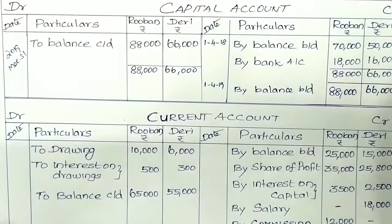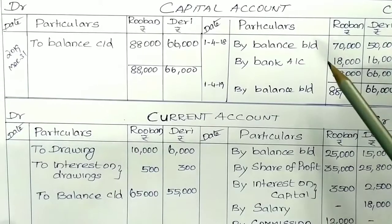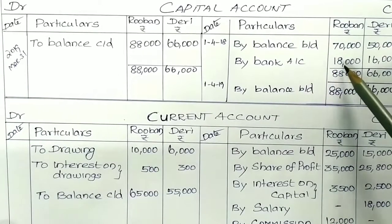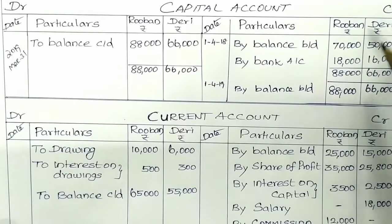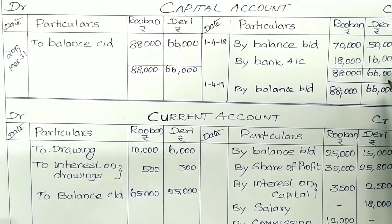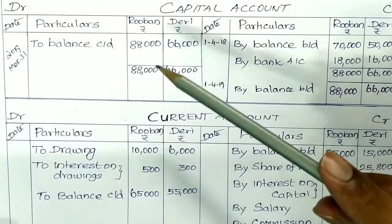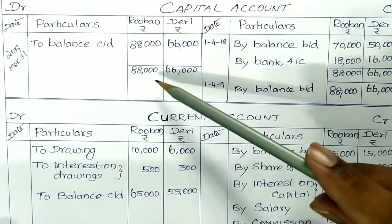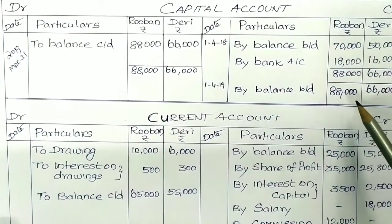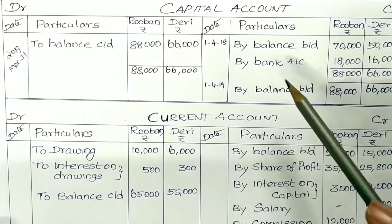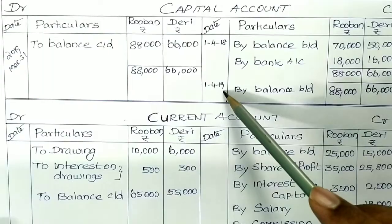For the capital account, the credit side shows opening balances of 70,000 and 50,000, plus additional capital of 18,000 and 16,000. Reuben's total is 88,000 and the other partner's total is 66,000. The closing balance carried down is 88,000 and 66,000, and these become the balance brought down — the opening balance for the next year.